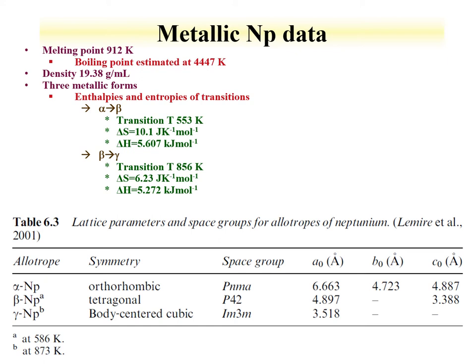There are three metallic forms of neptunium. The transition temperatures are: alpha to beta around 500 K, and beta to gamma around 850 K. The symmetries of the phases have been identified as orthorhombic, tetragonal, and body-centered cubic. We see this trend again compared to uranium, where we went from lower symmetries and at higher temperatures ended with something similar to body-centered cubic.